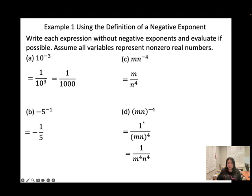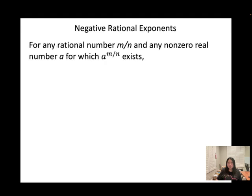You could keep that as a final answer, or distribute the 4 to each. Now, negative rational exponents: a to the power of negative m over n. This applies for any rational number m over n and any non-zero real number a. The negative means 1 over, so we get 1 over a to the power of m over n.